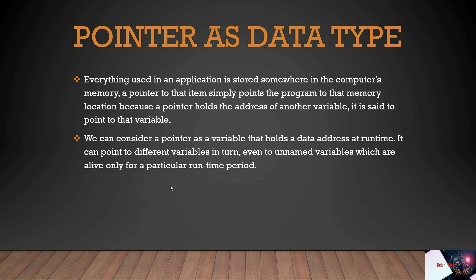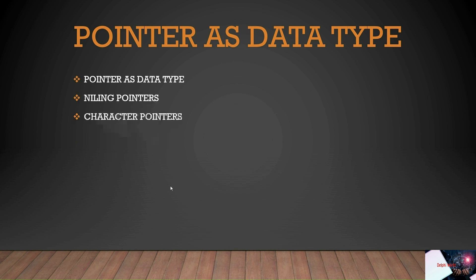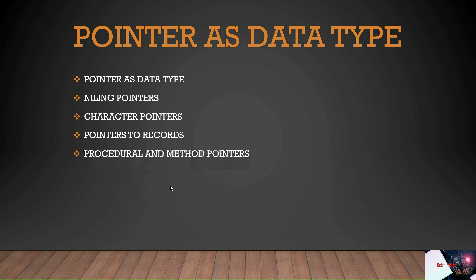We can point to different variables, even to named variables which are alive only for a particular runtime period. We have several pointer types: nil pointers, character pointers, pointers to records, procedural and method pointers, and typed pointers.